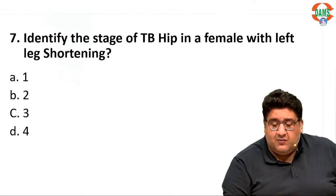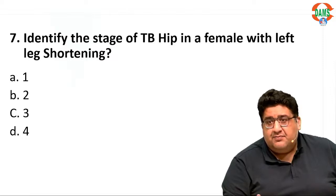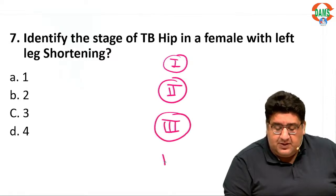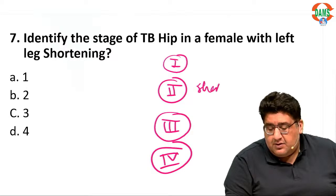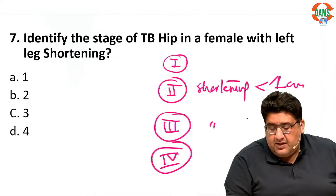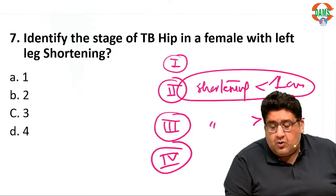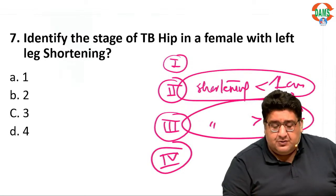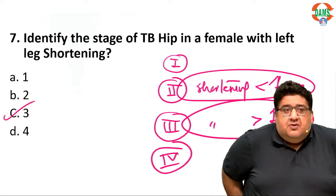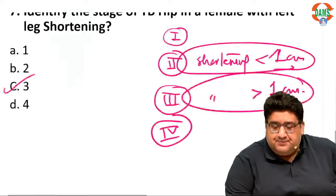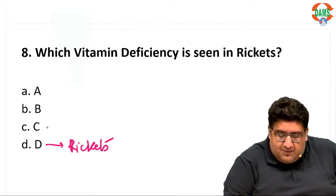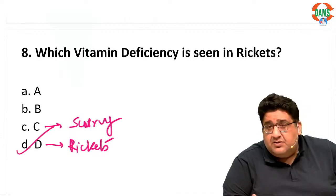For the next question, identify the stage of tibia hip in a female where left leg shortening is seen. There are four stages of tibia hip. Shortening of less than one centimeter is apparent shortening; more than one centimeter is real or true shortening. The most correct type of shortening is seen in stage 3, so the answer is stage 3. As for the vitamin deficiency question, everybody knows that vitamin D deficiency leads to rickets and vitamin C deficiency leads to scurvy.